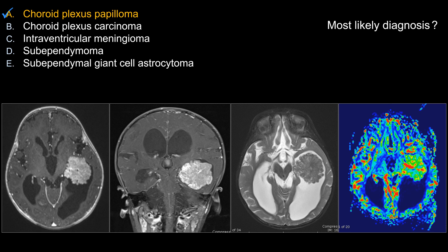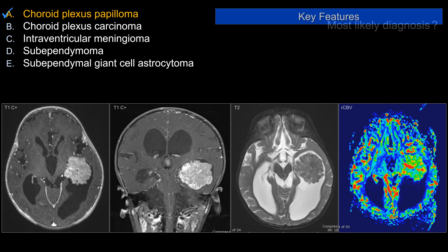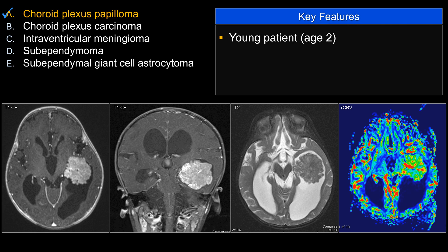I have a feeling that many of you had the choice come down to A or B. The better choice here is choice A, choroid plexus papilloma. First of all, this is a pediatric patient, so your differential diagnosis can be based on age.